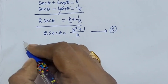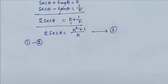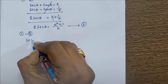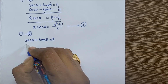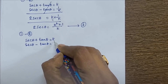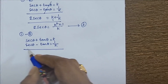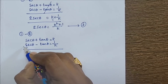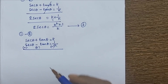Next, subtract: do equation 1 minus equation 2. Equation 1 is secant theta plus tan theta equals k, and equation 2 is secant theta minus tan theta equals 1 by k. When subtracting, the signs of equation 2 are interchanged: the minus becomes plus and the plus becomes minus.